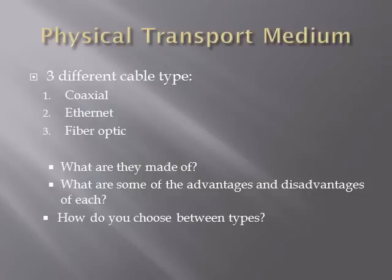Physical transport medium refers to the physical cable used to transport data. There are three types we will discuss: coaxial, ethernet, and fiber optic. We will cover what each cable is made of, the advantages and disadvantages, and how to choose between the three types.